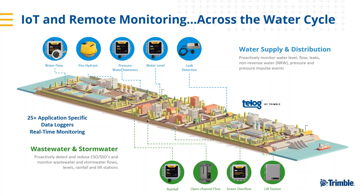Common applications we can monitor through the Trimble Unity platform include water flow, fire hydrant monitoring, pressure monitoring, water hammer and transient events, water level inside tanks, ponds, wells, and aquifers. We also have leak detection tools that will listen for leaks on all different types of pipes.